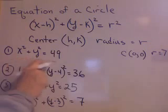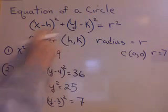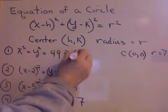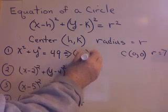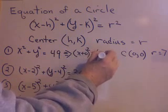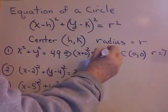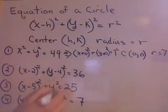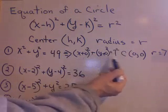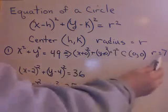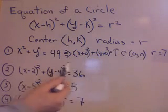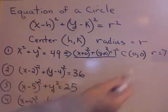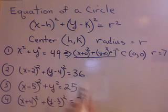Now, you might not recognize this as being of that form. If you don't, you can always rewrite it. I could rewrite this as x plus 0 squared plus y plus 0 squared equals 7 squared. Now, it's easy to see that the center is 0, 0, and the radius is 7. I recommend putting equations into this form to help you recognize that if you don't see it first off.